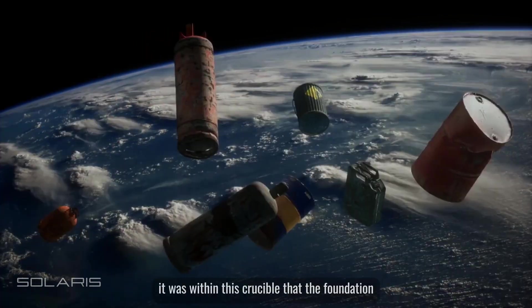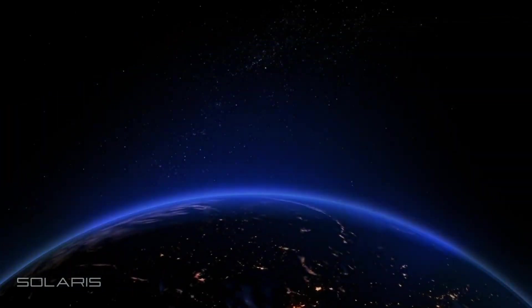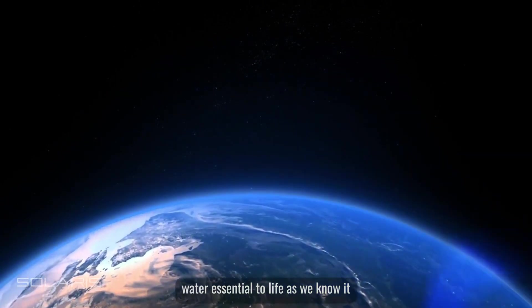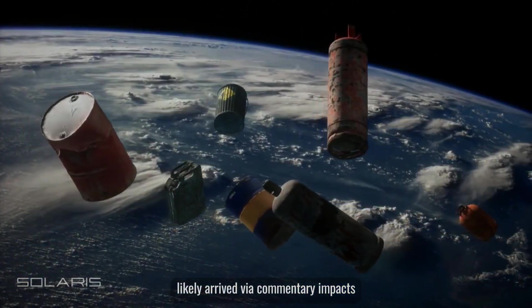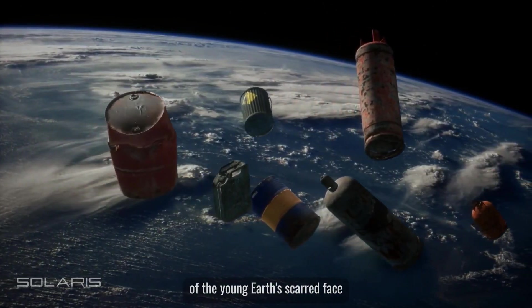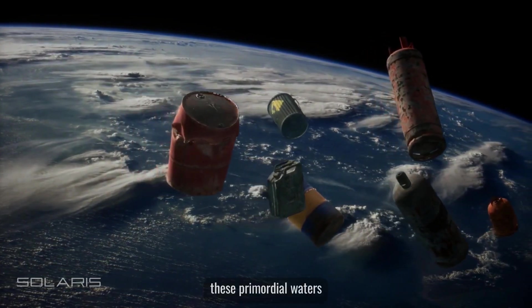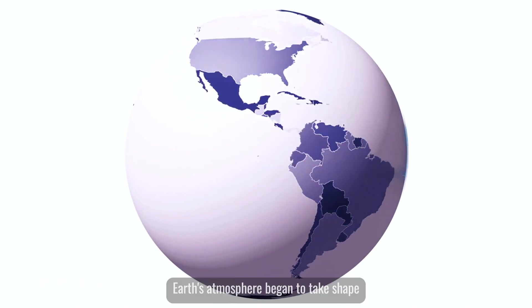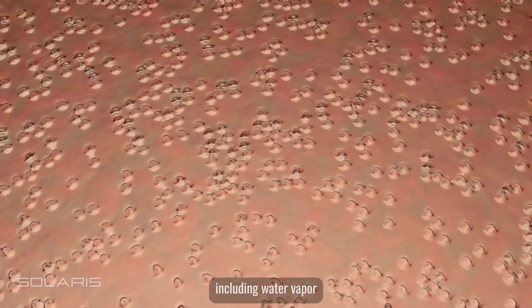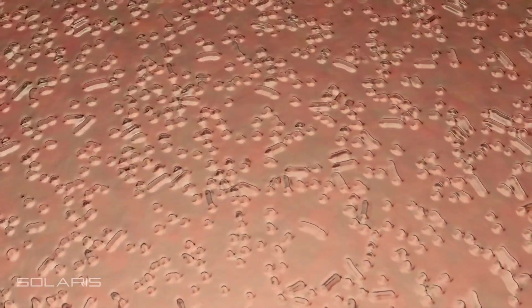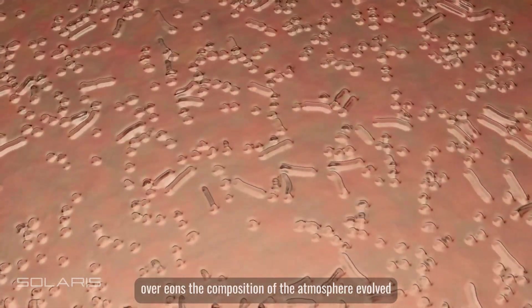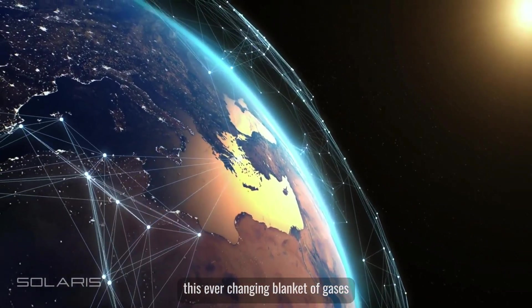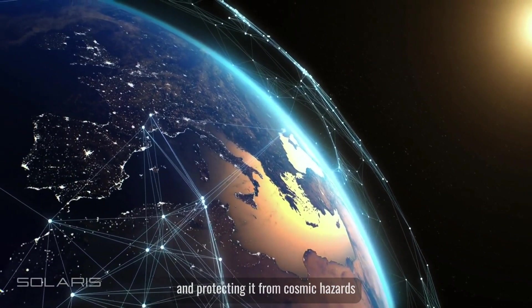Gradually the surface cooled, allowing for the formation of a solid crust and the planet's first oceans. Water, essential to life as we know it, likely arrived via cometary impacts, filling the basins and valleys of the young Earth's scarred face. These primordial waters became the cradle for the planet's earliest life forms. Simultaneously, Earth's atmosphere began to take shape, initially a cocktail of volcanic gases, including water vapor, carbon dioxide, and ammonia. Over eons, the composition of the atmosphere evolved, shaped by volcanic activity, the emergence of life, and the planet's intrinsic geologic processes. This ever-changing blanket of gases played a crucial role in regulating Earth's climate and protecting it from cosmic hazards.